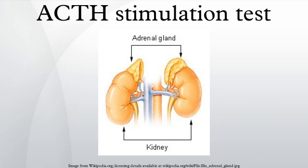ACTH plasma test plus cortisol stimulation: An ACTH plasma test should always be given at the same time as the ACTH stimulation, although many doctors consider the test inaccurate. This test measures how much ACTH the pituitary gland is producing. A healthy ACTH value should be just into the upper third of the range. The ACTH plasma and ACTH stimulation test together can give a clearer picture, especially for secondary adrenal insufficiency. For primary adrenal insufficiency and Addison's disease, ACTH will be high, either at the top or above range. In Addison's disease, ACTH may be way above range and may reach the hundreds.